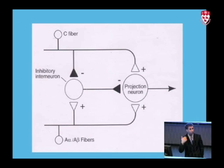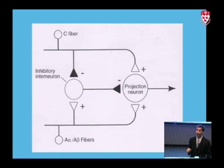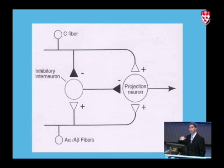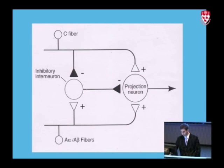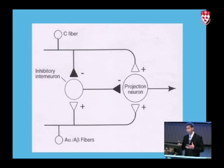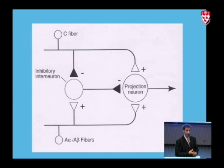What Melzack and Wall showed us is that there is a relationship between the small diameter and large diameter afferents. Because of the speed at which the large diameter afferents reach the cord, they have an inhibitory effect on the nociceptive firing also entering the cord. Chiropractic adjustments have a very profound, very strong stimulation of large diameter afferents because the adjustment will stimulate skin receptors, GTOs, muscle spindles, and joint mechanoreceptors.